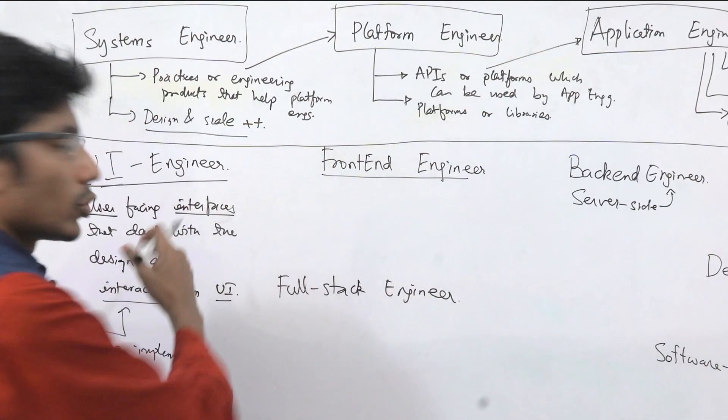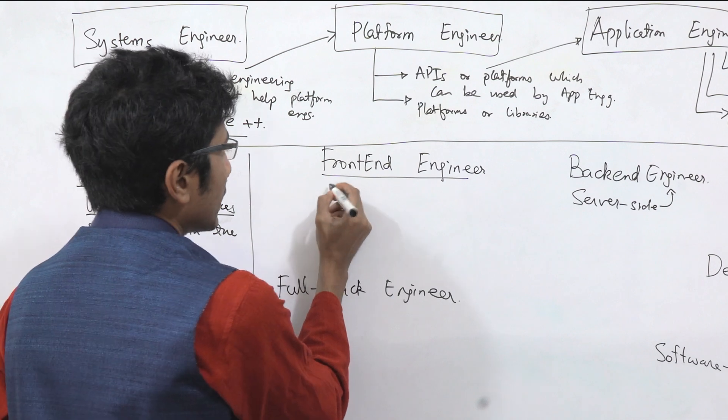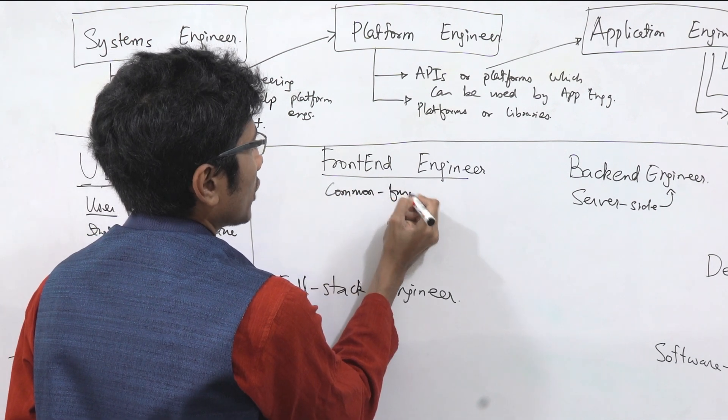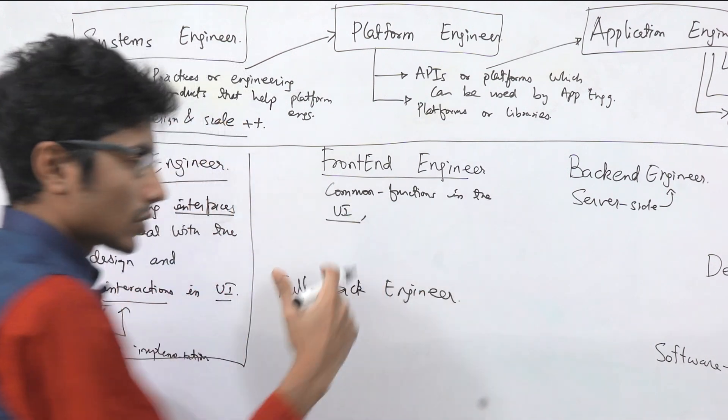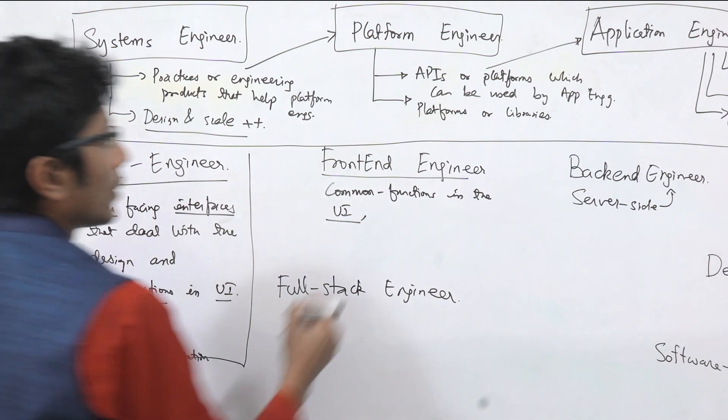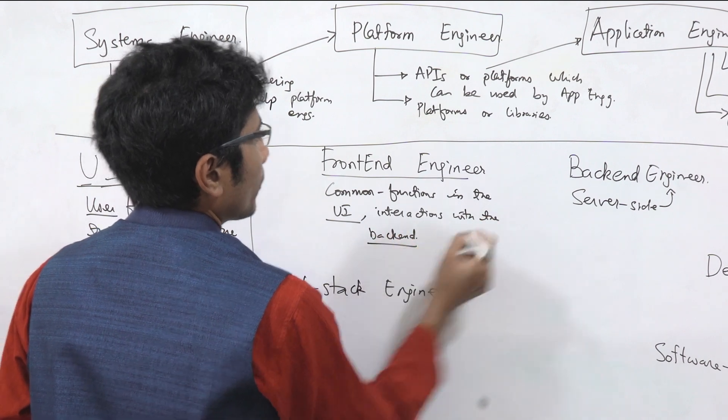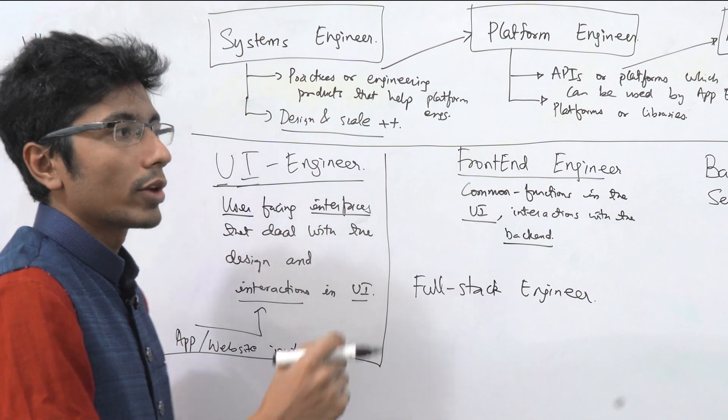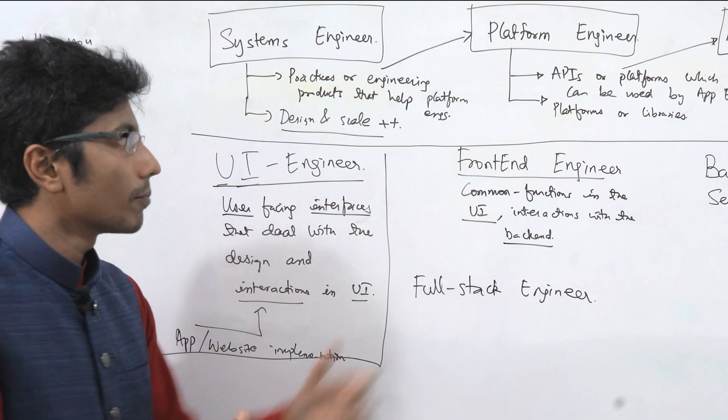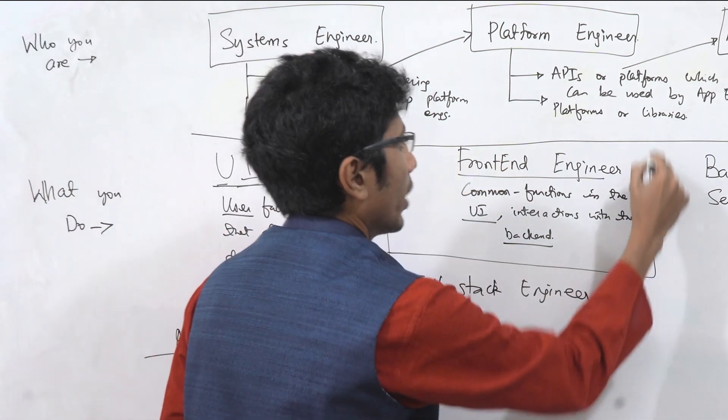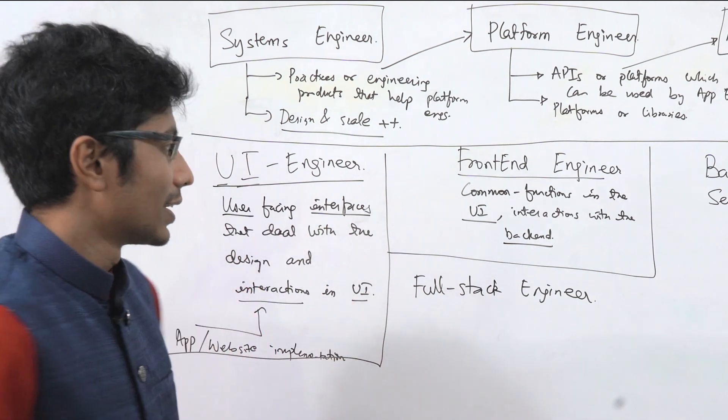Front-end engineer usually does the UI engineering also, but I have separated it out so that it's easier to understand. What they do is they come up with common functions in the UI, so they are sort of on the platform side of the UI and interactions with the back-end. Any kind of API calls that you need to make or if you are going to make a call to external system, usually that is encapsulated in code in the front-end by a front-end engineer. In a startup there's not going to be separate UI and front-end engineers, this is just going to be one person.